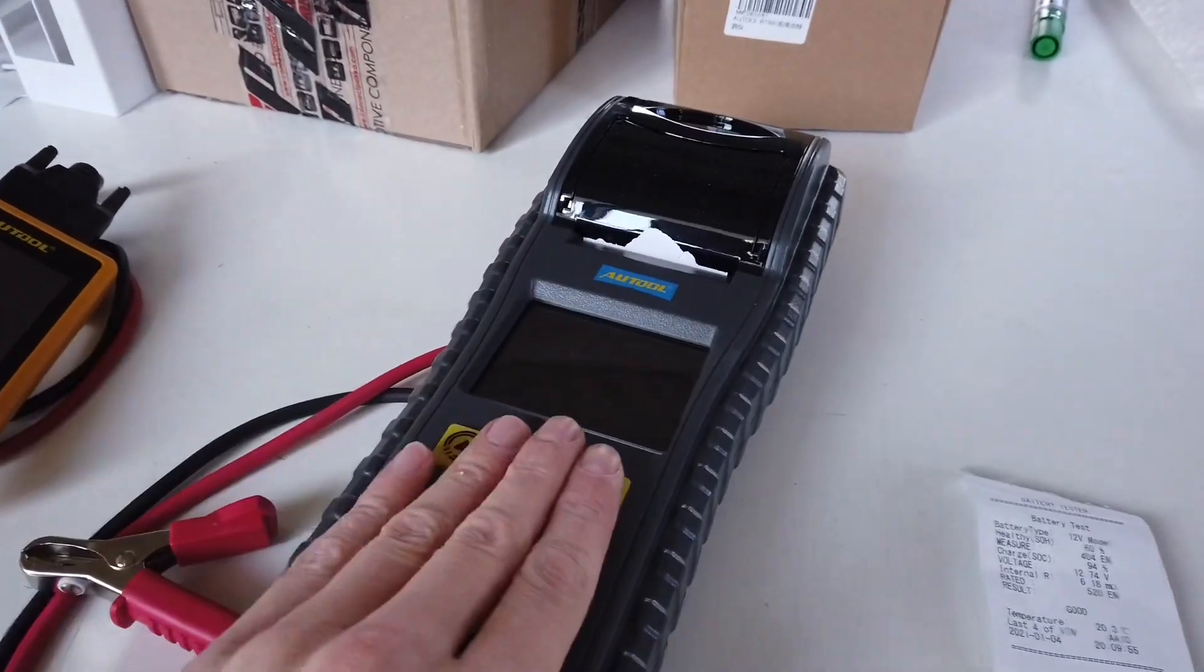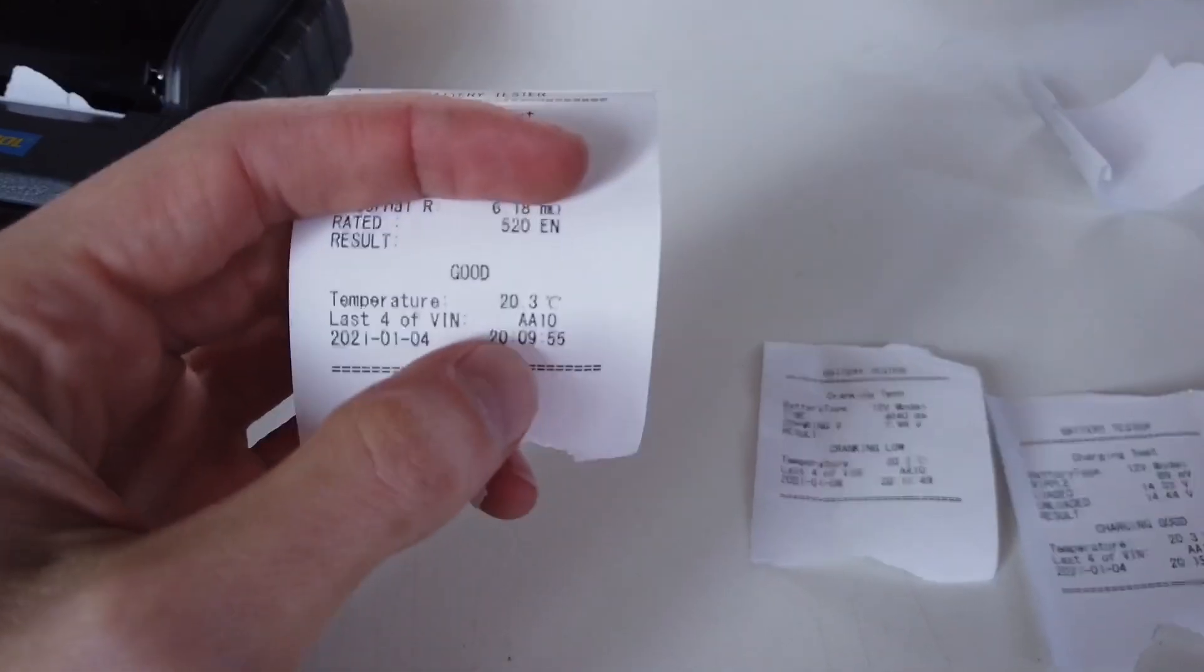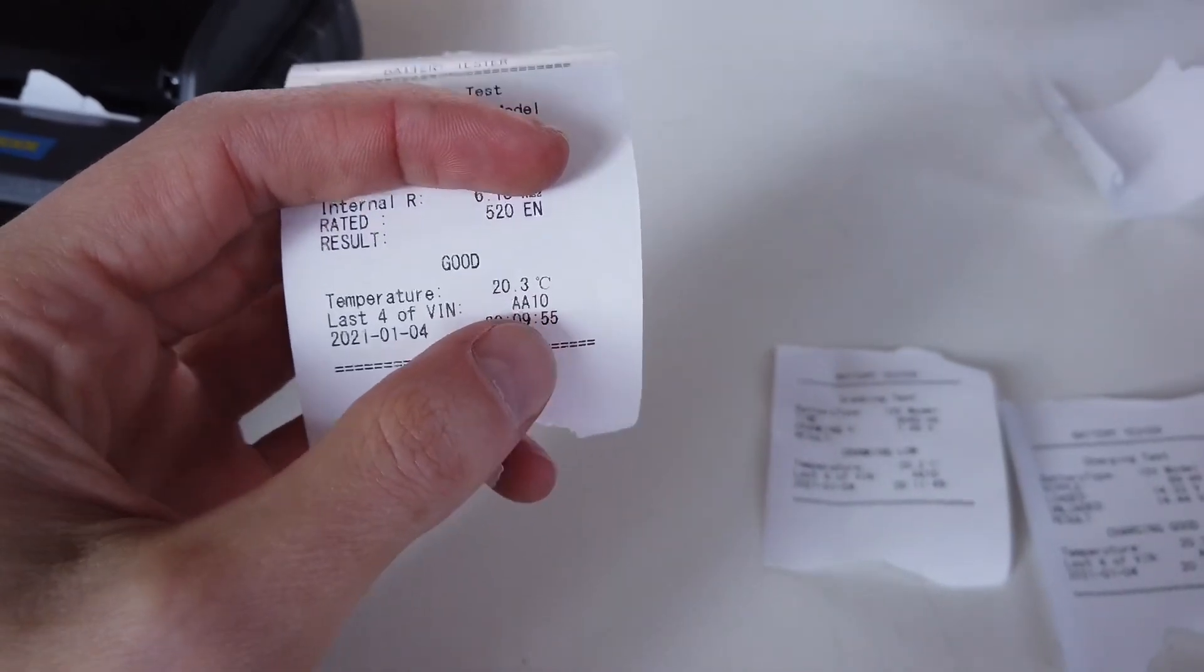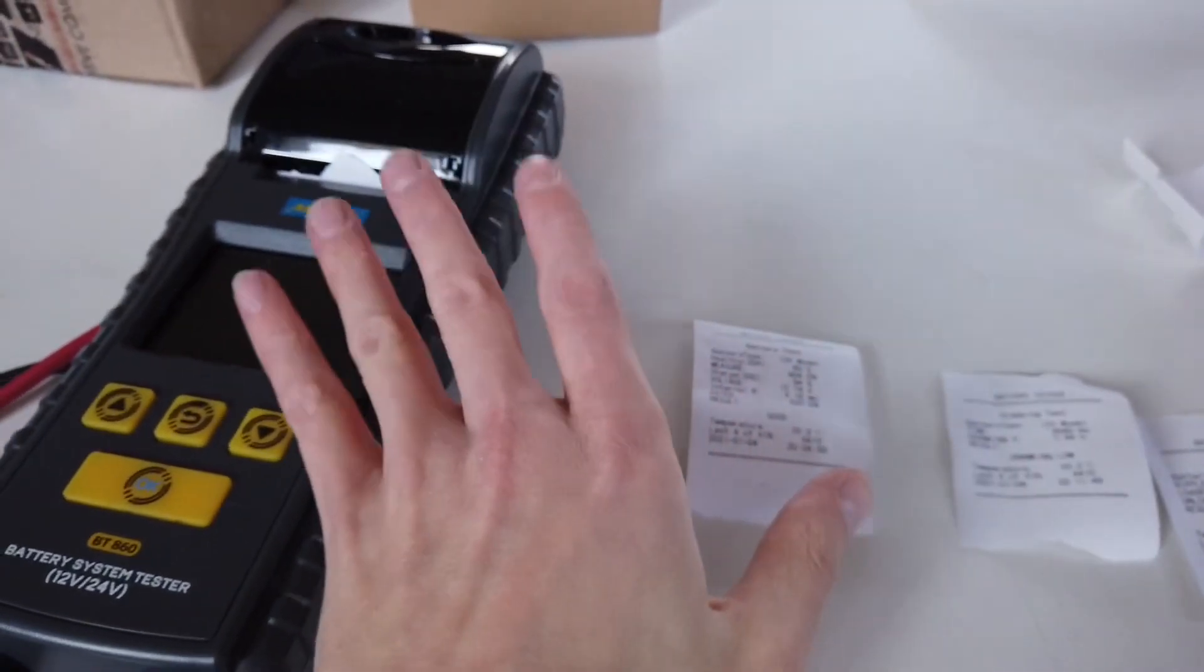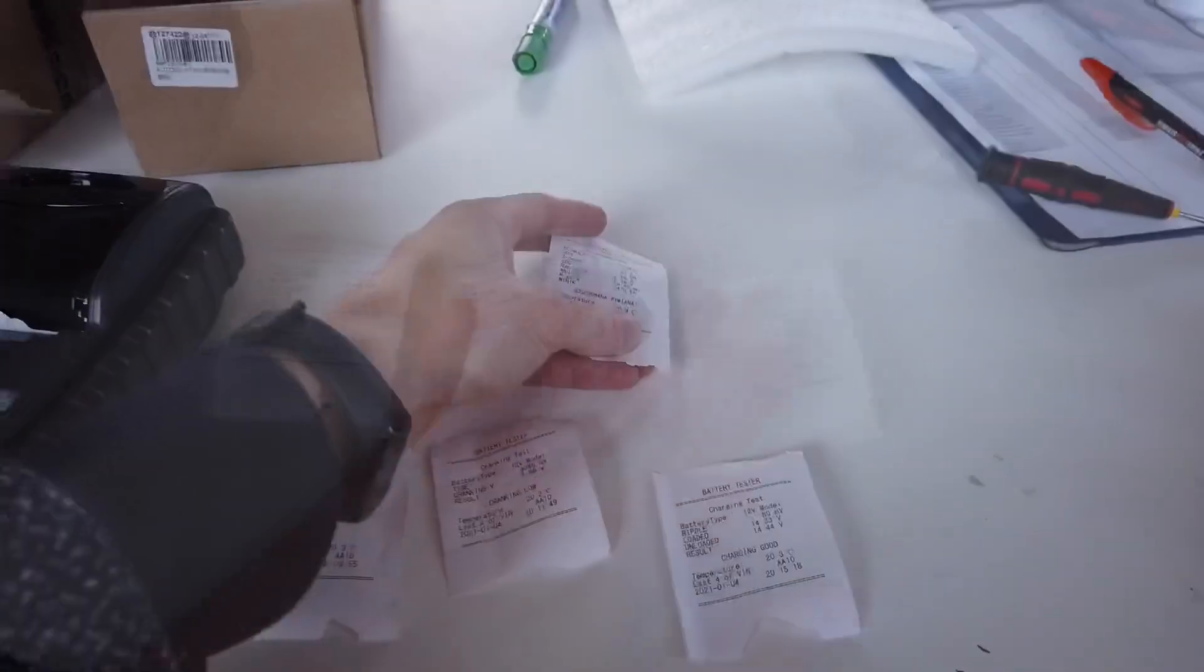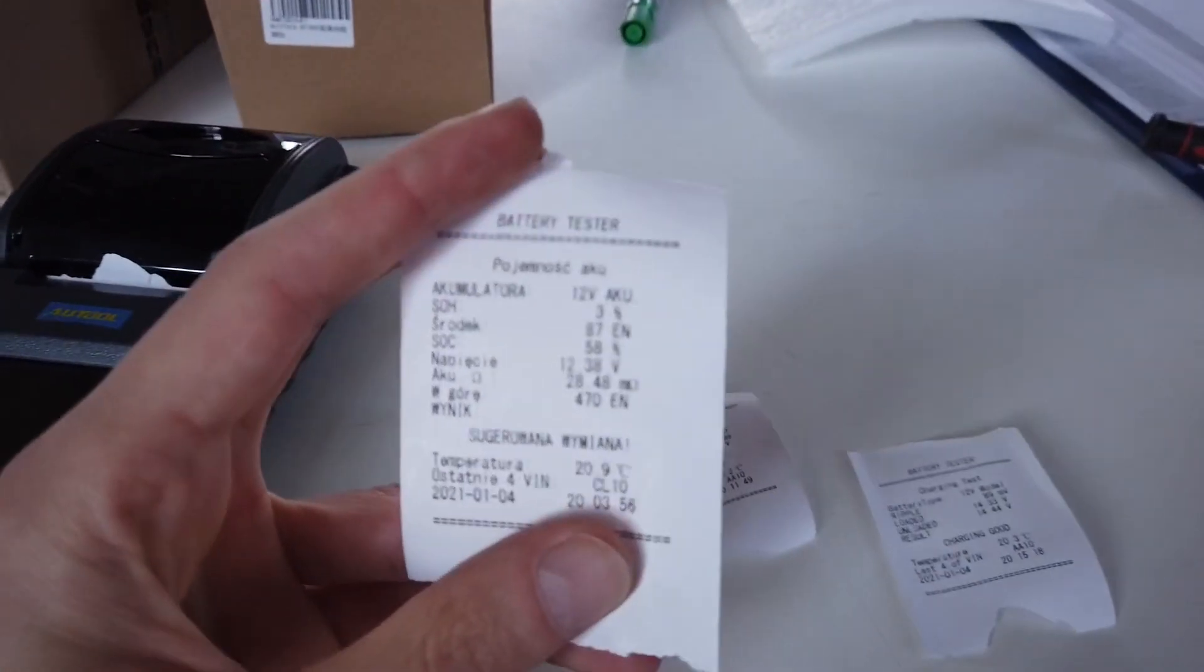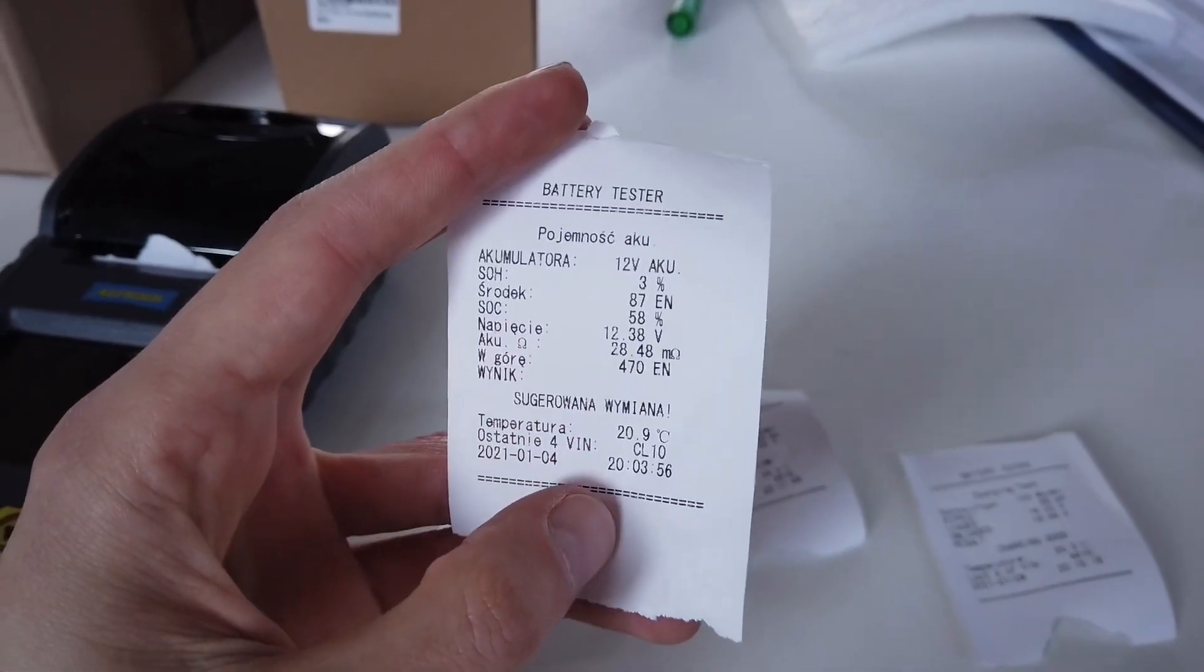On the printouts you can even see the ambient temperature. I'm not sure if this is taken into account when calculating battery health, since at lower temperature the battery should perform a little bit worse, so I'm not sure if that's calculated or maybe it's just information like the time and date over here. Also worth noticing that in the Polish printout you have all of the Polish special characters.